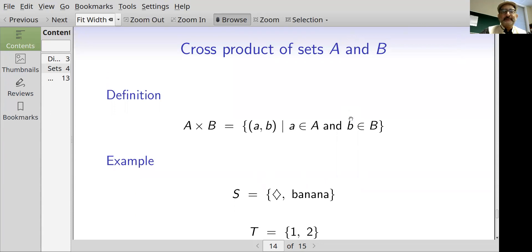We can create new sets out of old sets by taking their cross product or their Cartesian product. So A cross B consists of ordered pairs (a, b) such that a is in A and b is in B.